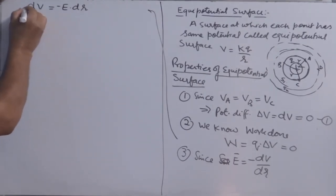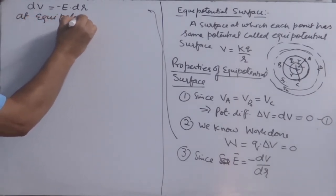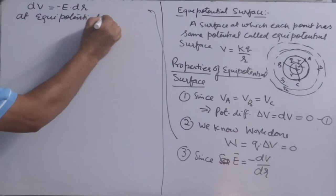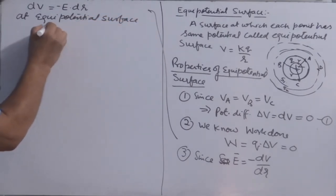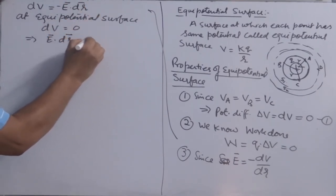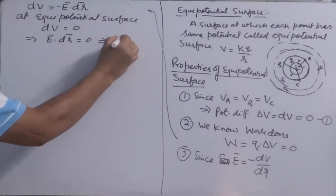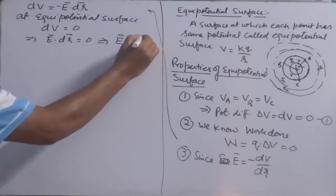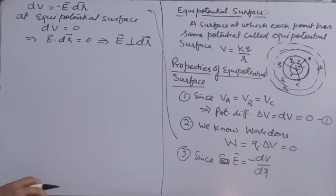And at equipotential surface, what is 0? DV is 0. This shows E dot DR is 0. This shows electric field is always perpendicular to the DR. That is electric field is perpendicular to every point lying on equipotential surface.